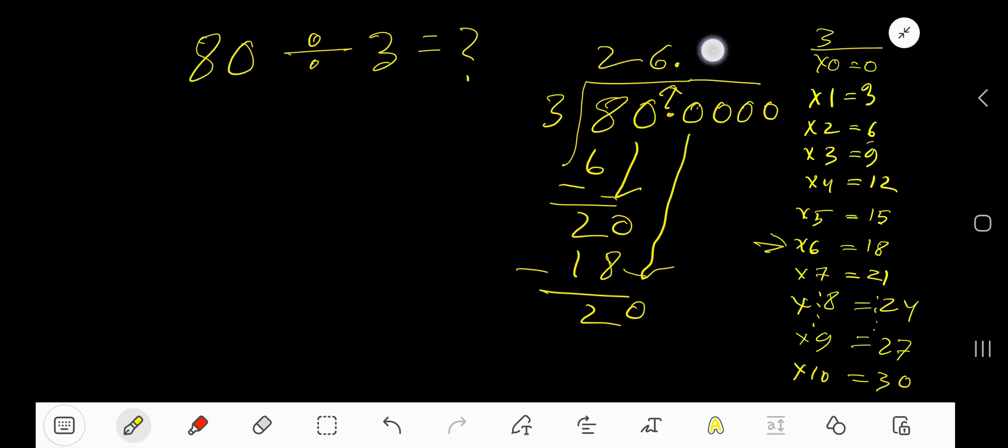3 goes into 20. How many times? 6 times. 6 times 3, 18. Subtract 2.